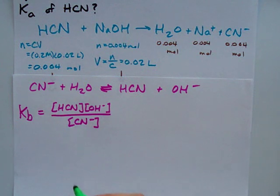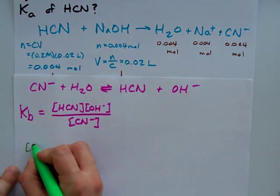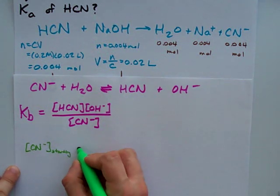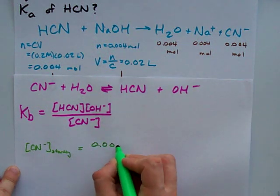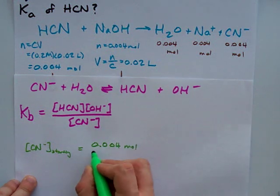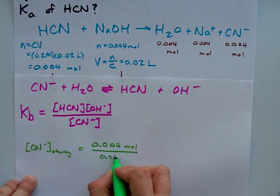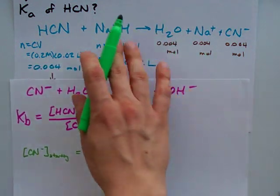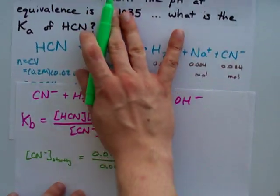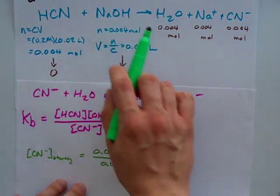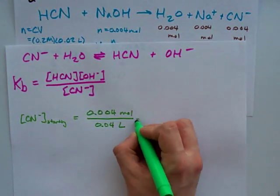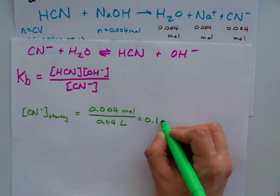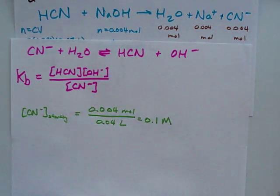I would find that I'm starting with... oh man, I don't even know. My starting concentration for CN- is 0.004 moles in a new total of 40 milliliters. Notice the total is 40 because we mixed 20 milliliters of HCN with 20 milliliters of NaOH. That leaves me with 0.1 moles per liter of CN- to start.